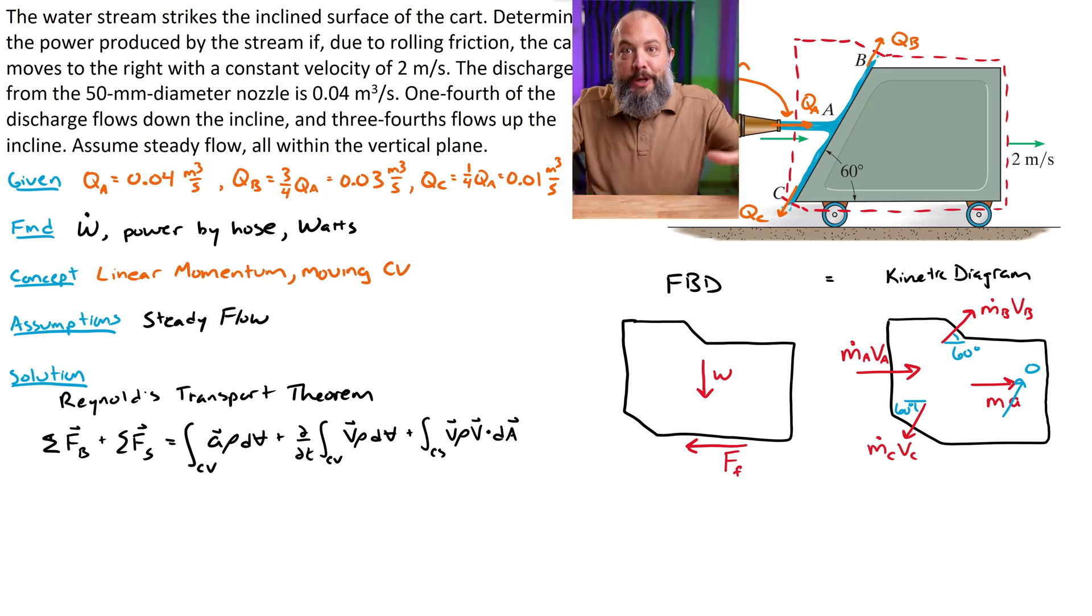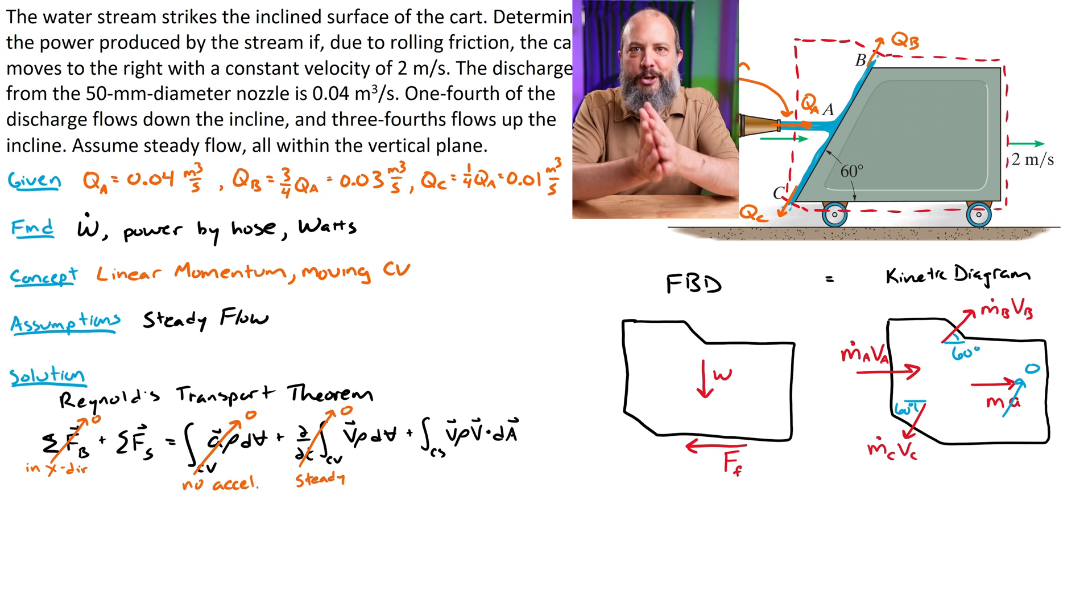So if I write out my equilibrium equation here, I can ignore body forces because the weight is pointing down and I'm only interested in the horizontal. I have one surface force that's friction pointing to the left. And on the right hand side, I crossed off MA. I crossed off the accumulation term because of steady flow. I'm only interested in the water entering and exiting. So I have three M dot V terms. And for each one, I'm going to be very particular about all of my signs because it's so easy to make a sign error on these problems.